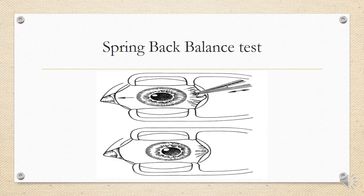The spring back balance test involves grasping the globe with tweezers, moving it to and fro, and then releasing it to see if the eye returns to primary position or remains in one particular position. If there is a restriction, the eye will go into that restricted position, indicating a restrictive squint rather than a paralytic squint.